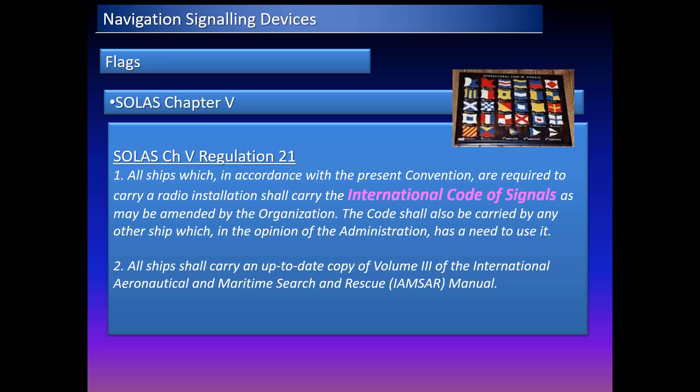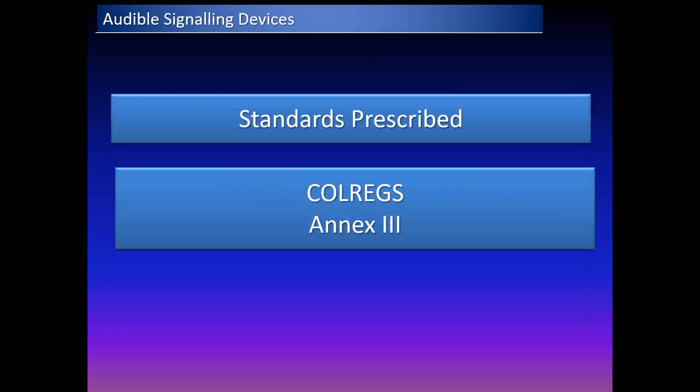SOLAS Chapter 5 also dictates that all ships required to carry a radio installation shall also carry the International Code of Signals. The code shall be carried by any other ship which the administration determines has a need to use it. All ships shall also carry an updated copy of Volume 3 of the International Aeronautical and Maritime Search and Rescue Manual, known as the IAMSAR manual.